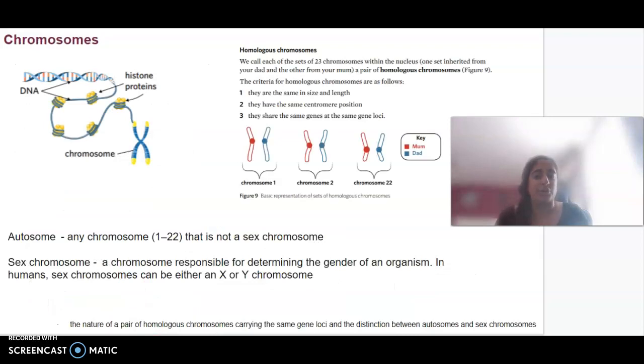A chromosome is just coiled-up DNA. It's very tightly wound, and we call homologous chromosomes basically sitting as a pair. Each of the 23 chromosomes found within a nucleus - we get one set from our mum and one set from our dad - they line up to be homologous.